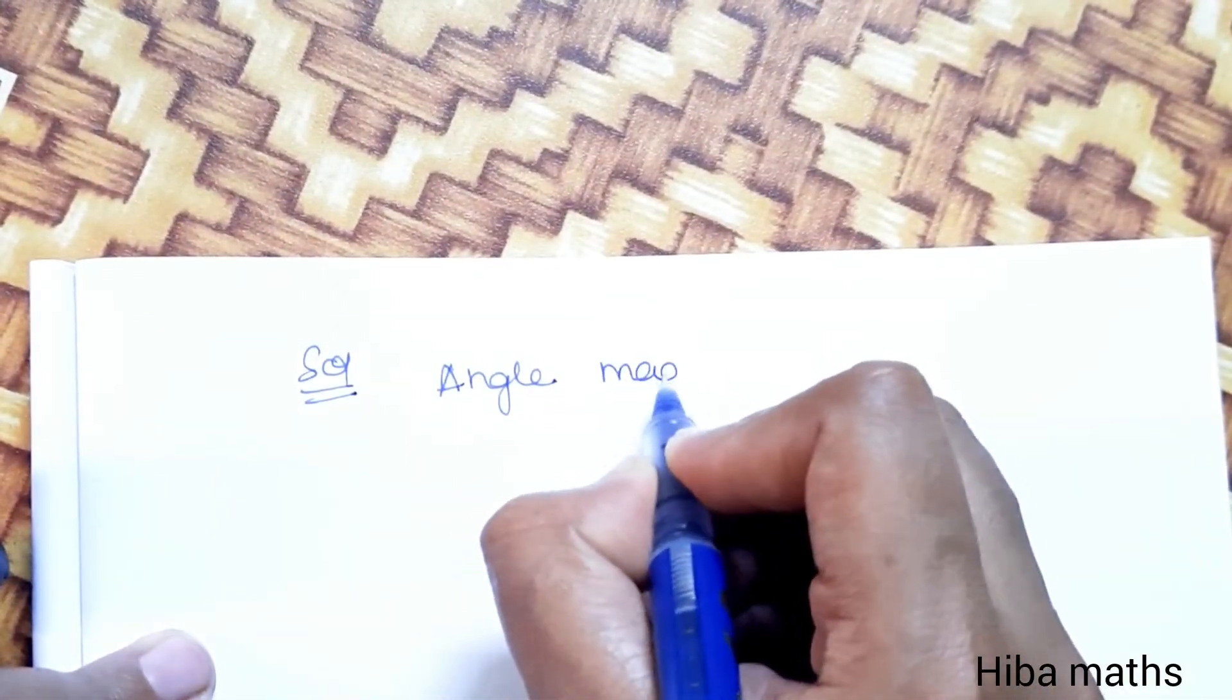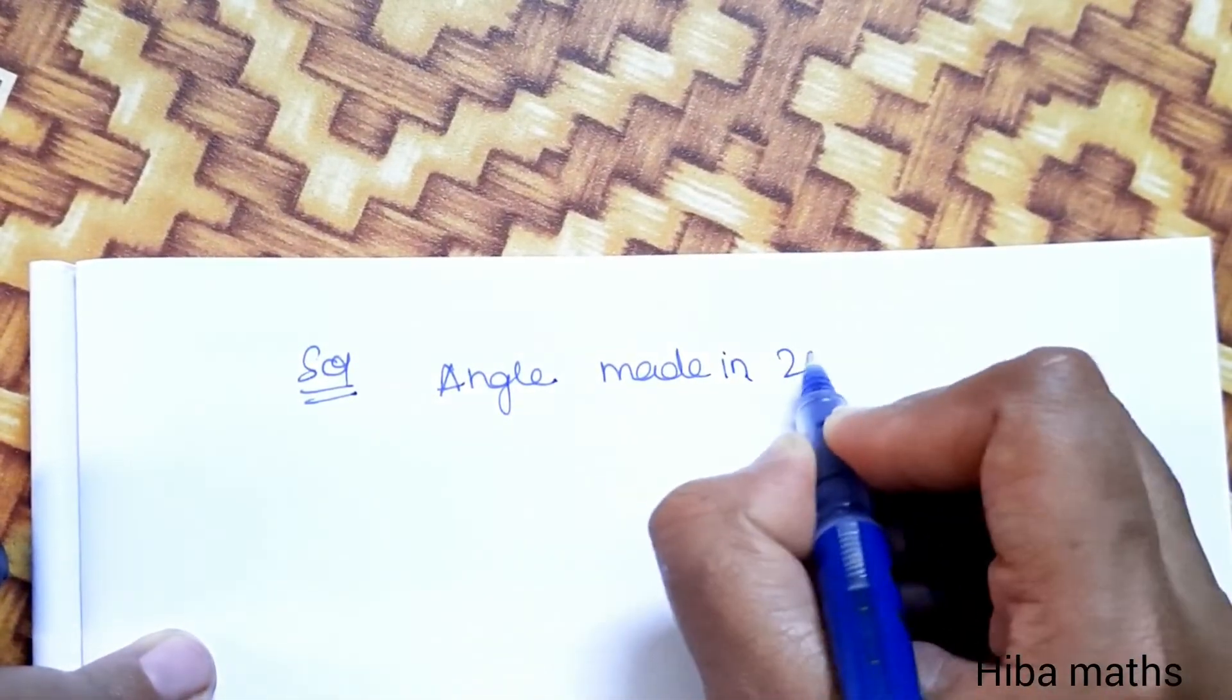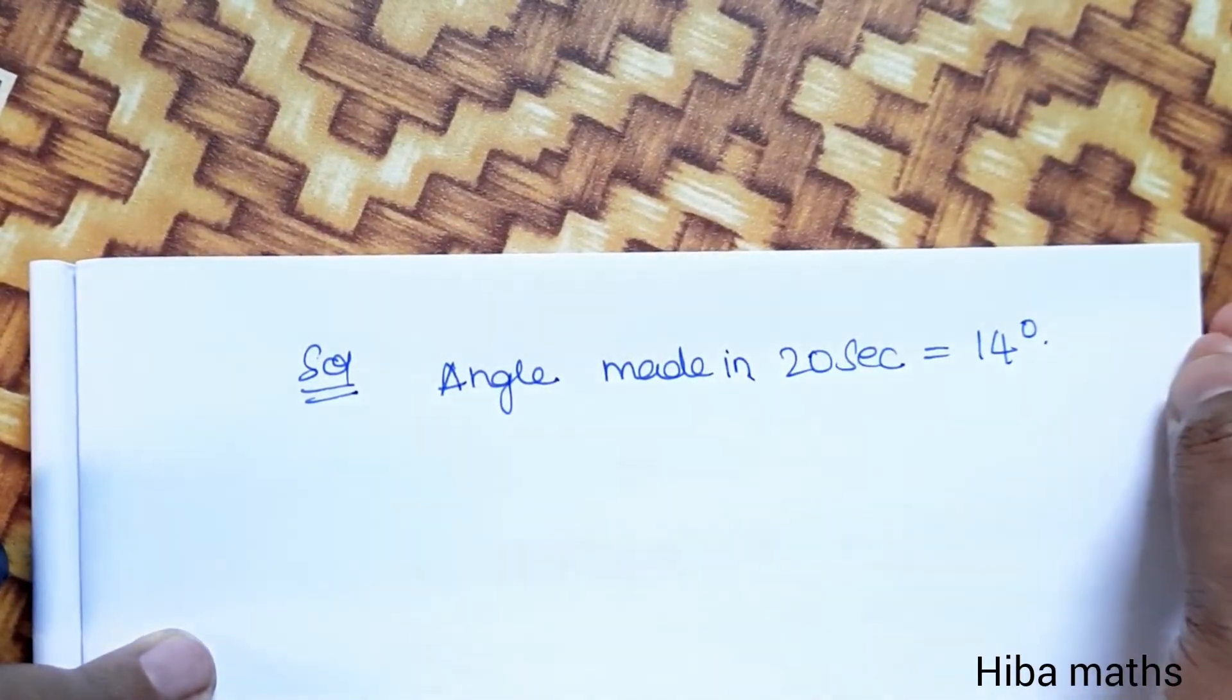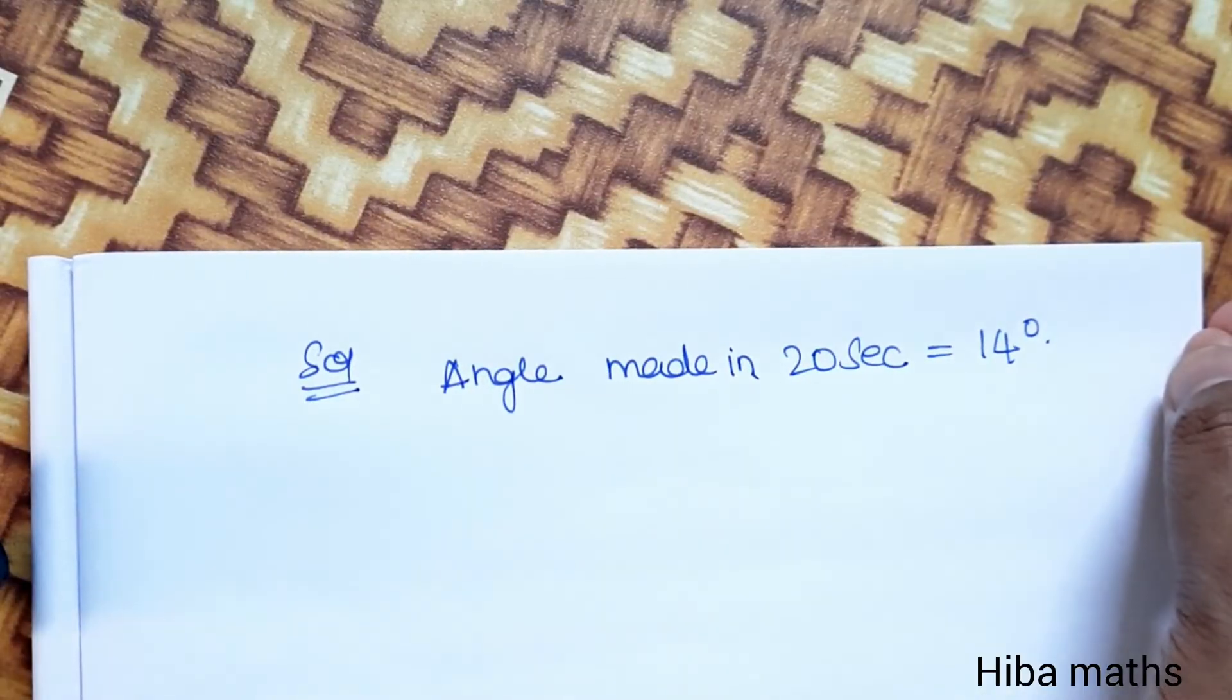So the angle made in 20 seconds is equal to 14 degrees. This is the solution.